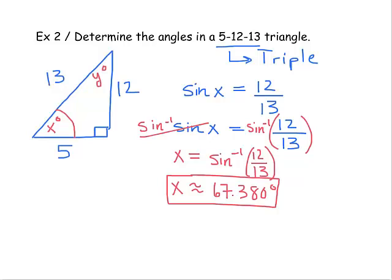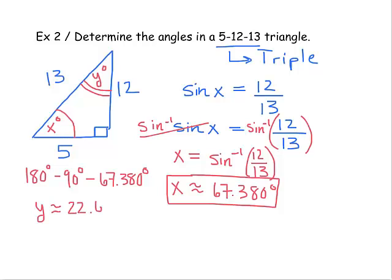To find the other missing angle y, one approach uses the fact that the three angle measures in a triangle always sum to 180 degrees. Now that we know x and that it's a right triangle, we do 180 degrees minus 90 degrees minus 67.380 degrees. That gives us y is approximately 22.620 degrees.